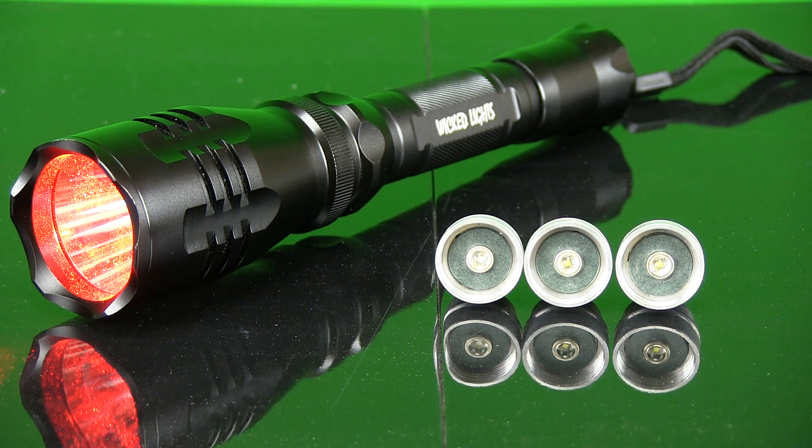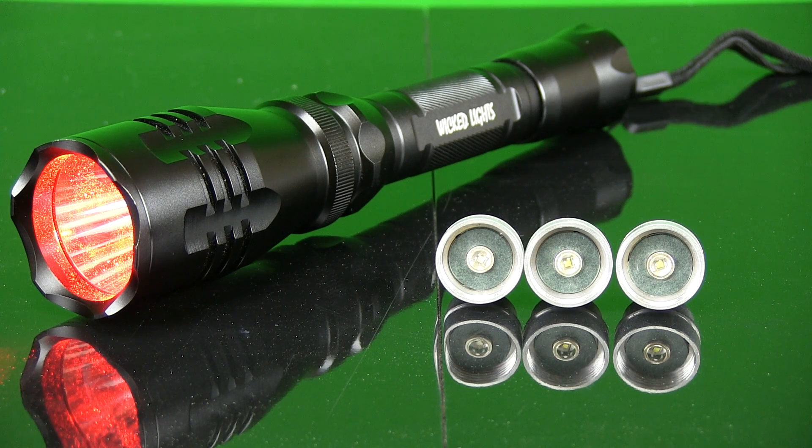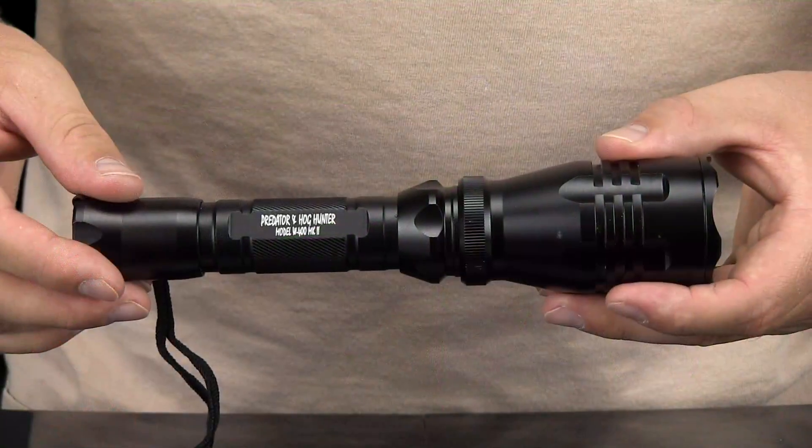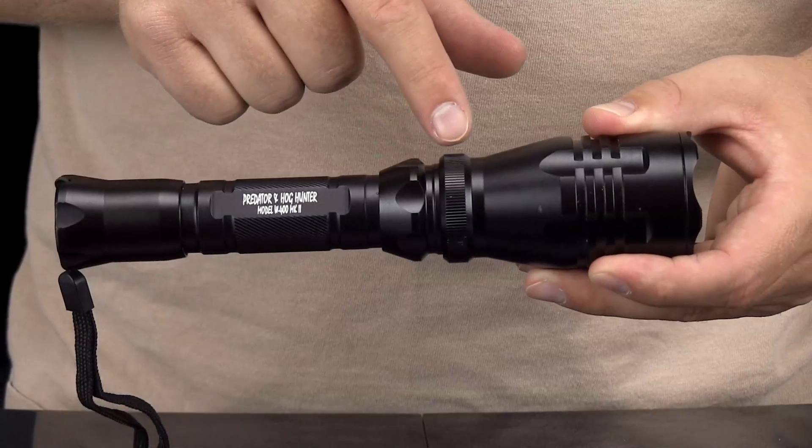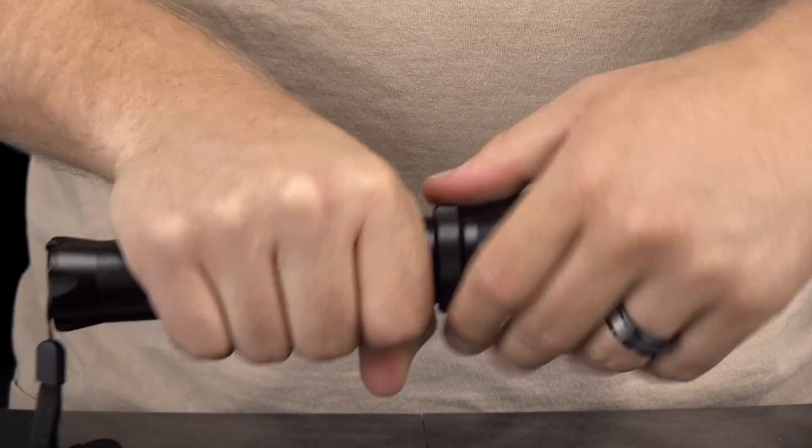There are two basic ways to change the LED assembly in the W400. The easiest way is to simply unscrew the entire bezel from the light by firmly holding the grip points on both the bezel and the light housing.